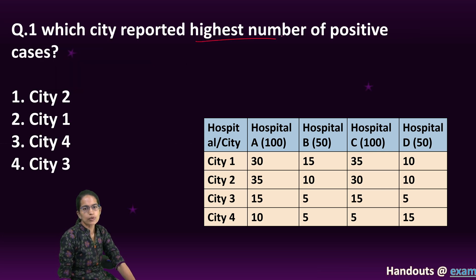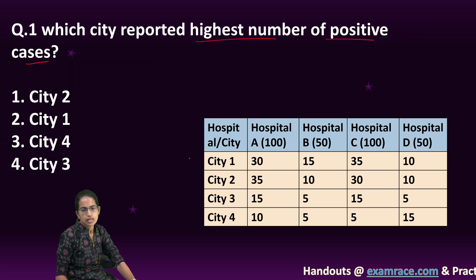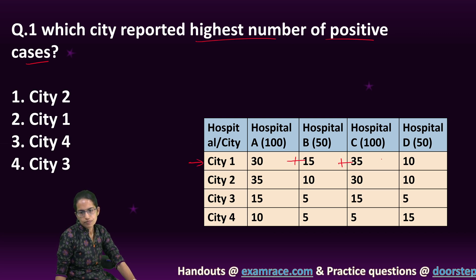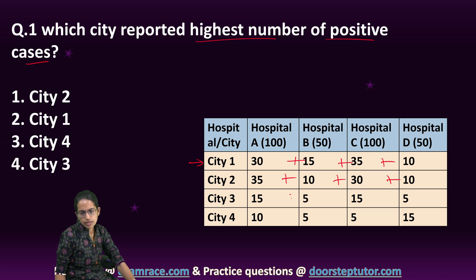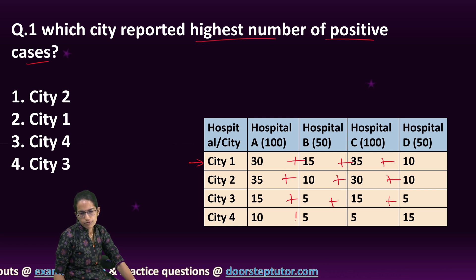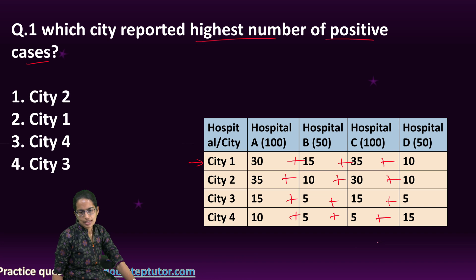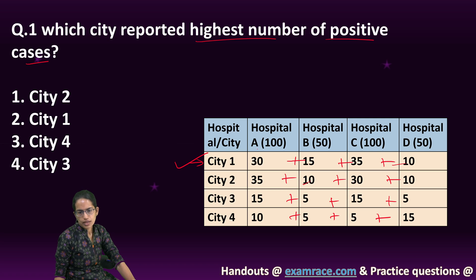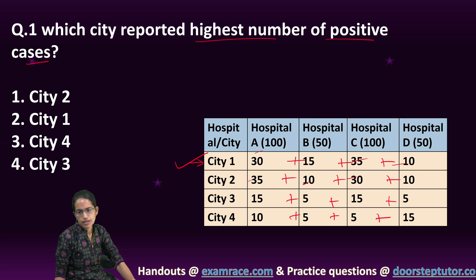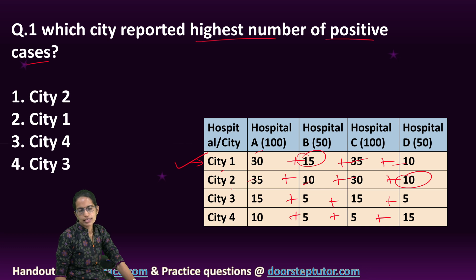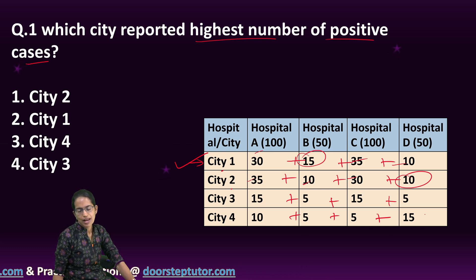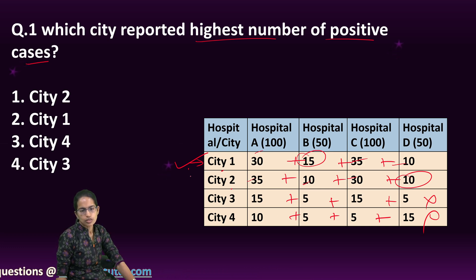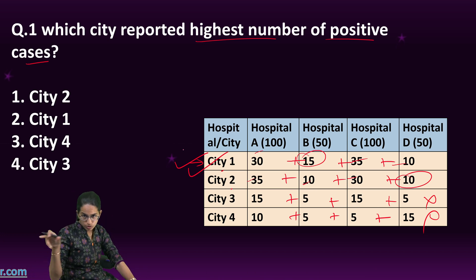The first question asks: which city reported the highest number of positive cases? For city 1, I add up all the data horizontally; city 2, city 3, and city 4 likewise. Cities 3 and 4 are visually less. Comparing city 1 and 2: canceling 10 with 10, 30 with 30, 35 with 35 — there is 5 more in city 1 than city 2. So city 1 would have the highest positive cases.